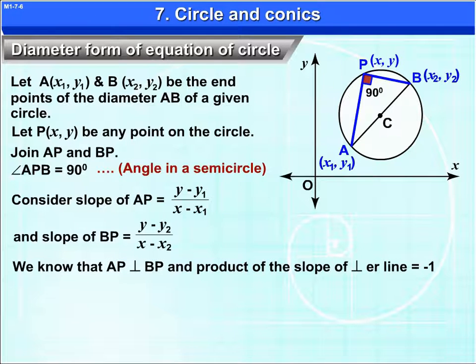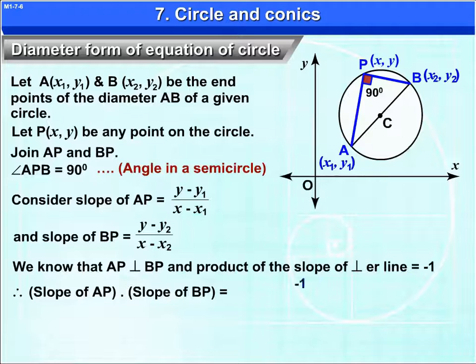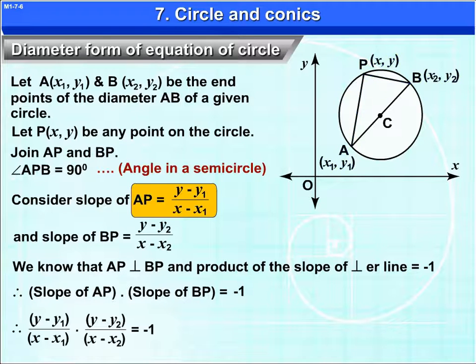We know that AP is perpendicular to BP and product of the slope of perpendicular lines is equal to minus 1. Therefore, slope of AP into slope of BP is equal to minus 1. Therefore, (y - y₁)/(x - x₁) into (y - y₂)/(x - x₂) is equal to minus 1.